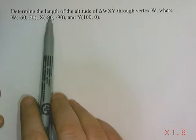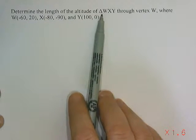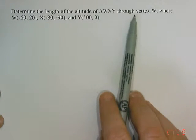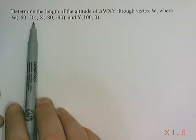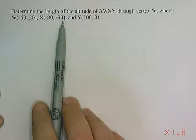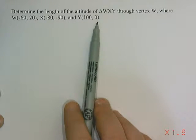Altitudes. Our problem reads, determine the length of the altitude of triangle WXY through vertex W, where W is (-60, 20), X is (-80, -90), and Y is (100, 0).